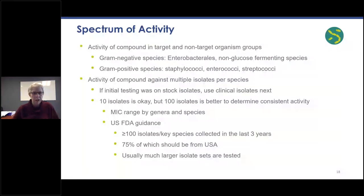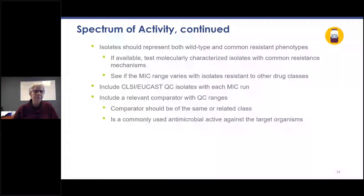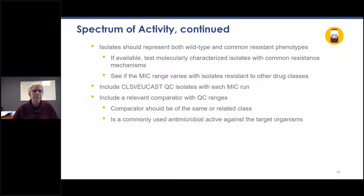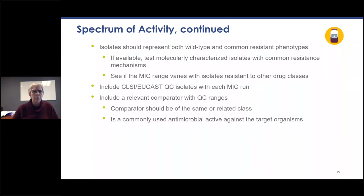You should look at the MIC range by genera and by species. FDA guidance asks for more than 100 isolates per key species collected within the last three years, and usually much larger isolate sets are tested. Isolates should represent both wild type and common resistant phenotypes. If available, test molecularly characterized isolates with common resistance mechanisms. Always include the CLSI/EUCAST QC isolates with each MIC run to begin collecting QC data on your compound. Include a relevant comparator with QC ranges in each run to ensure panels are performing correctly. The comparator should be of the same or related class if possible.